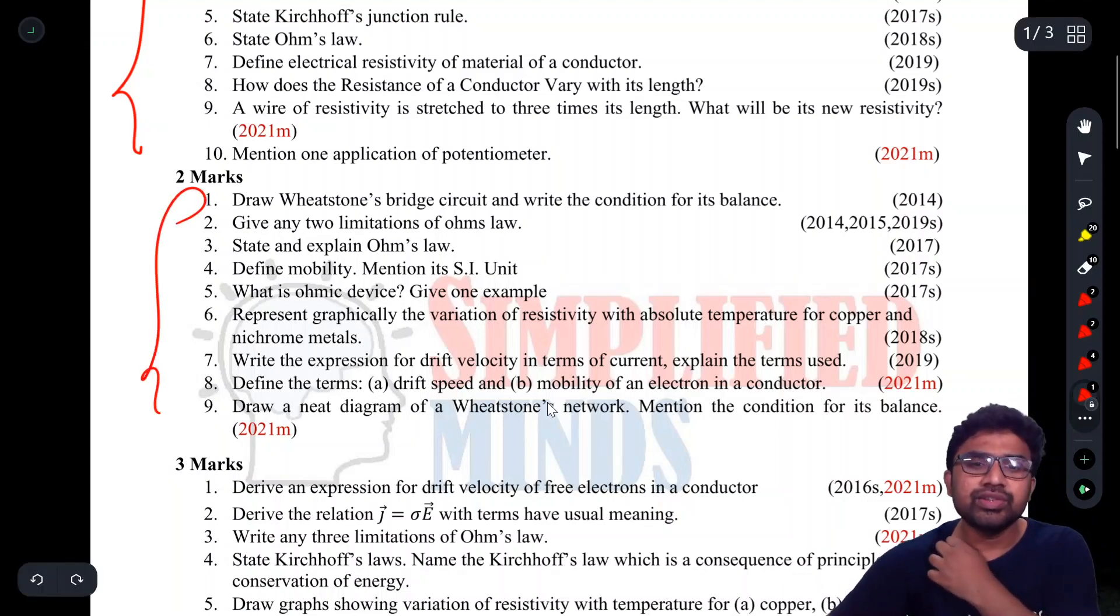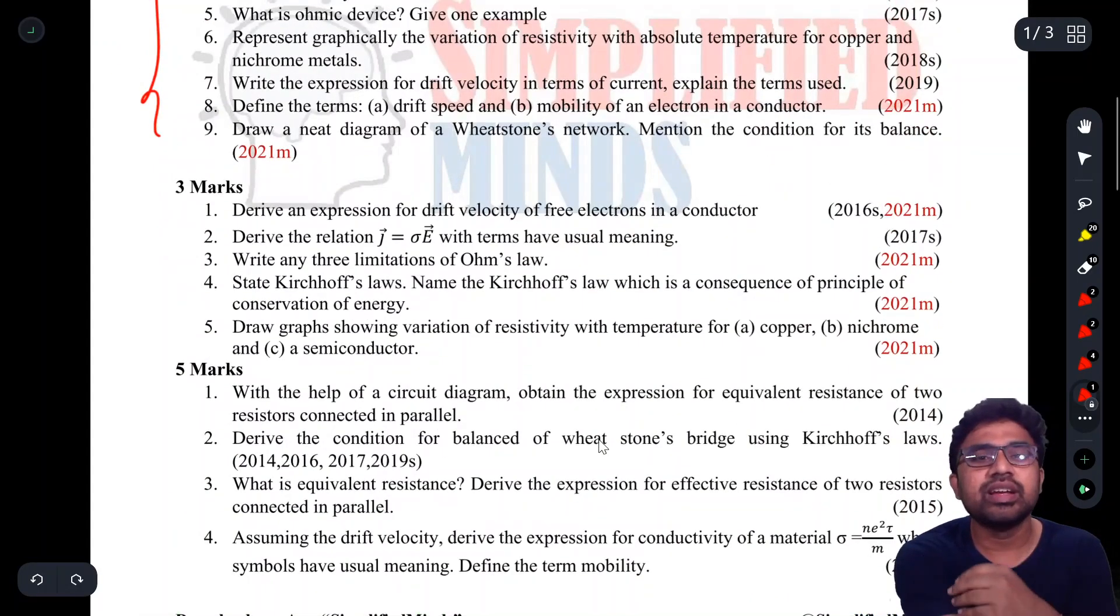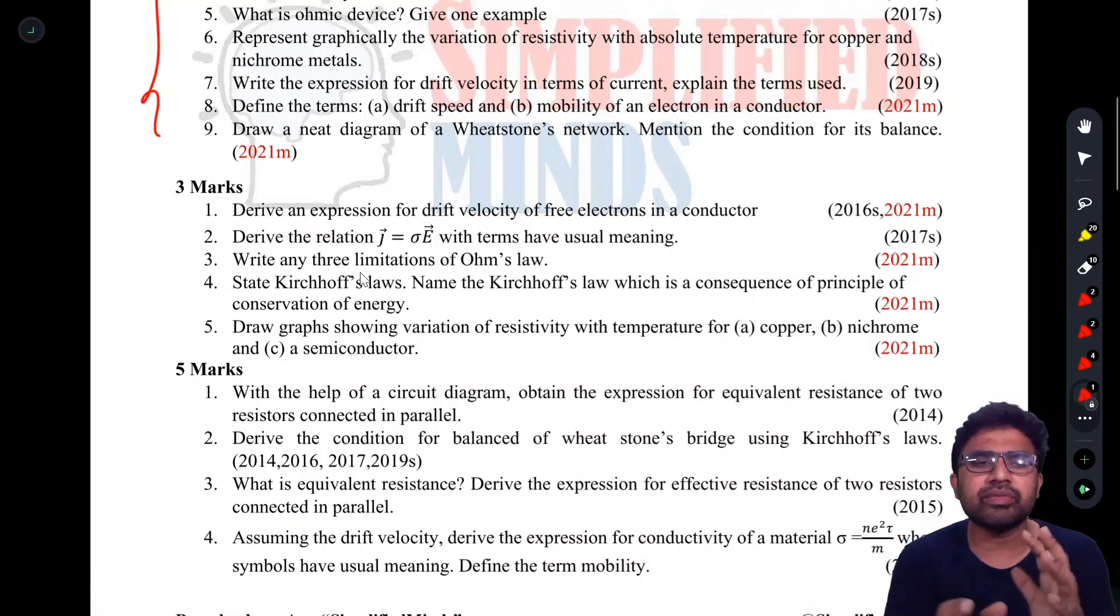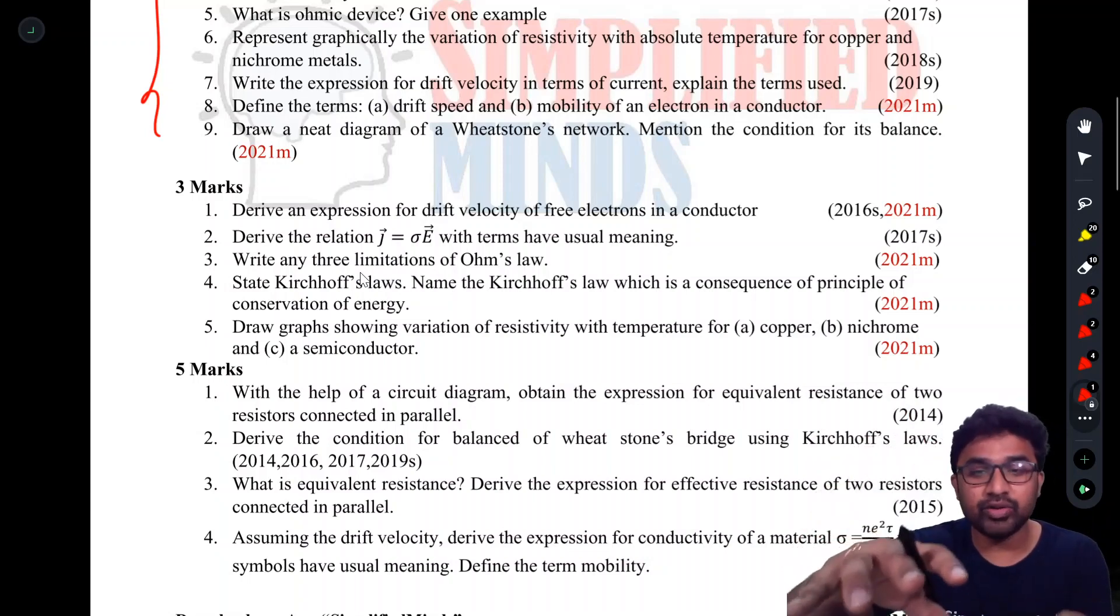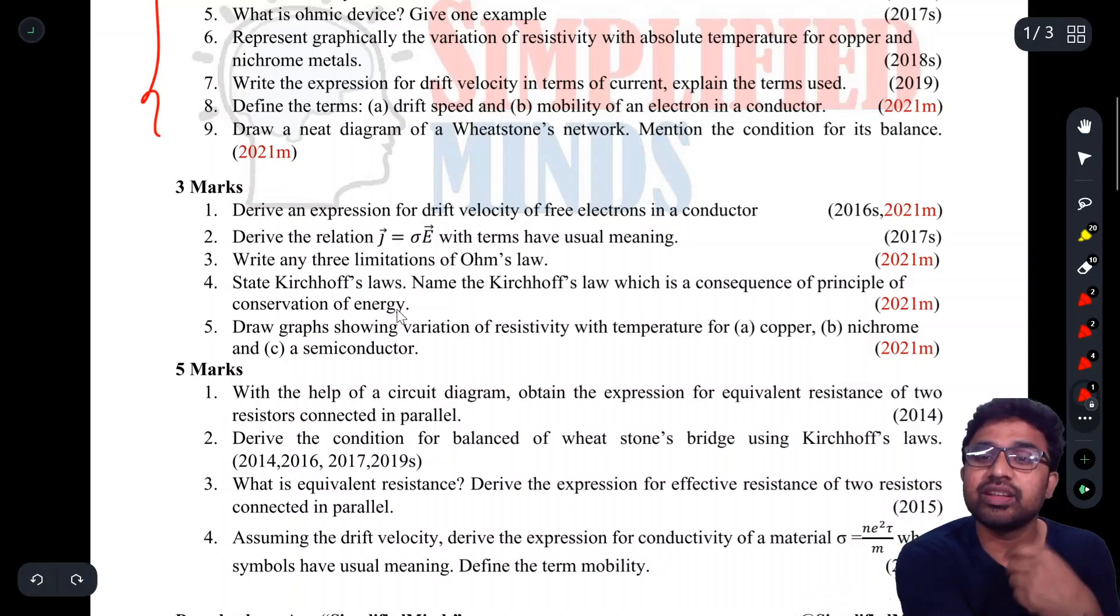All the kinds of questions they're going to ask in your exam - two markers and three markers. They can ask for derivations like the relation between J and sigma E, and also drift velocity derivation. You can keep checking the understanding.